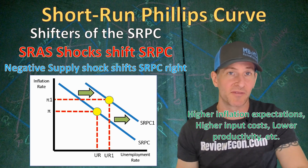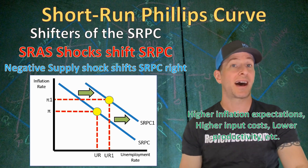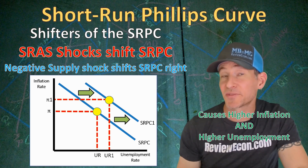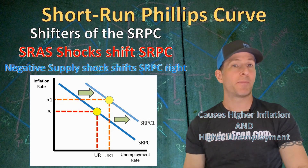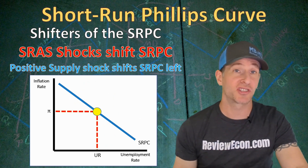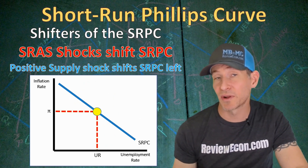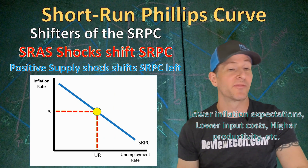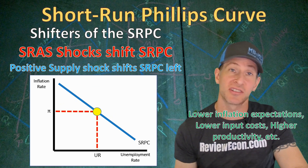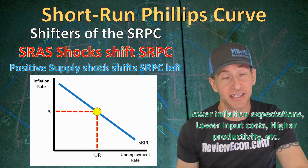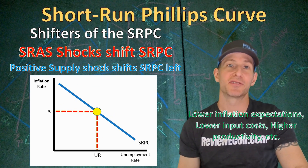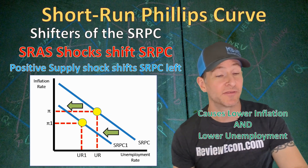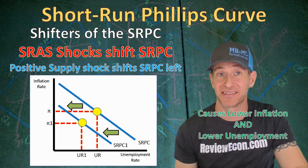When we get that rightward shift of the short-run Phillips Curve, it shows us that there is higher inflation and higher unemployment at the same time. We call that cost-push inflation or stagflation. And if we have a positive supply shock to the economy that shifts the short-run aggregate supply curve to the right, the short-run Phillips Curve is going to shift to the left. Positive supply shocks can come from lower inflation expectations, lower input costs, higher productivity, and other things. If any of those things occur, the short-run Phillips Curve shifts to the left, meaning we will have lower inflation and lower unemployment at the same time.